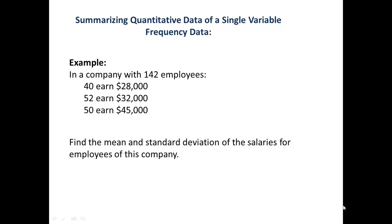The last thing we'll look at is how to summarize quantitative data of a single variable when it's given as frequency data. In a company with 142 employees, 40 earn $28,000 a year, 52 earn $32,000 a year, and 50 earn $45,000 per year. Rather than listing each salary individually, it's much more efficient to use a frequency table. So how do we find the mean and standard deviation of the salaries when the data is given in a frequency table?